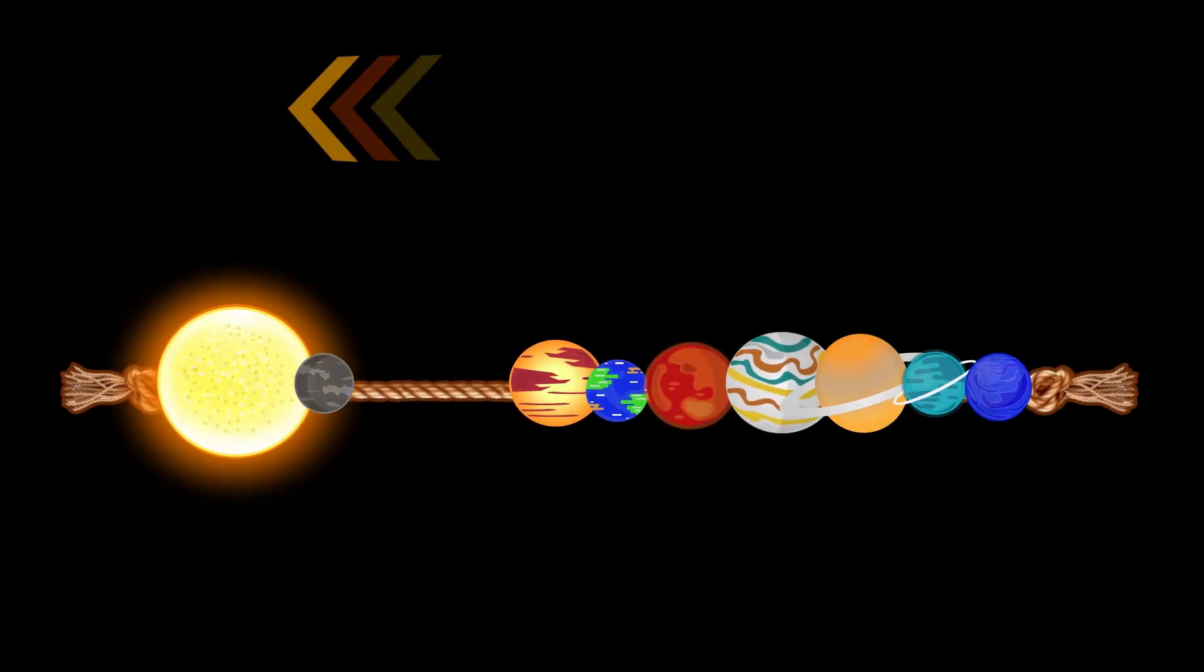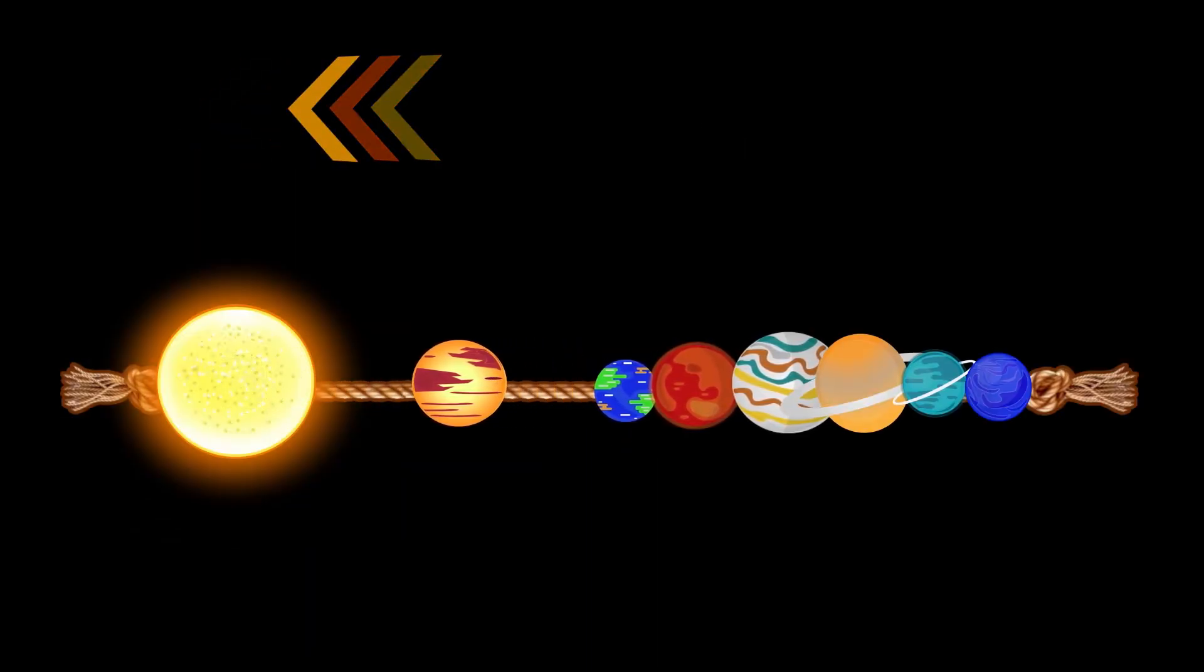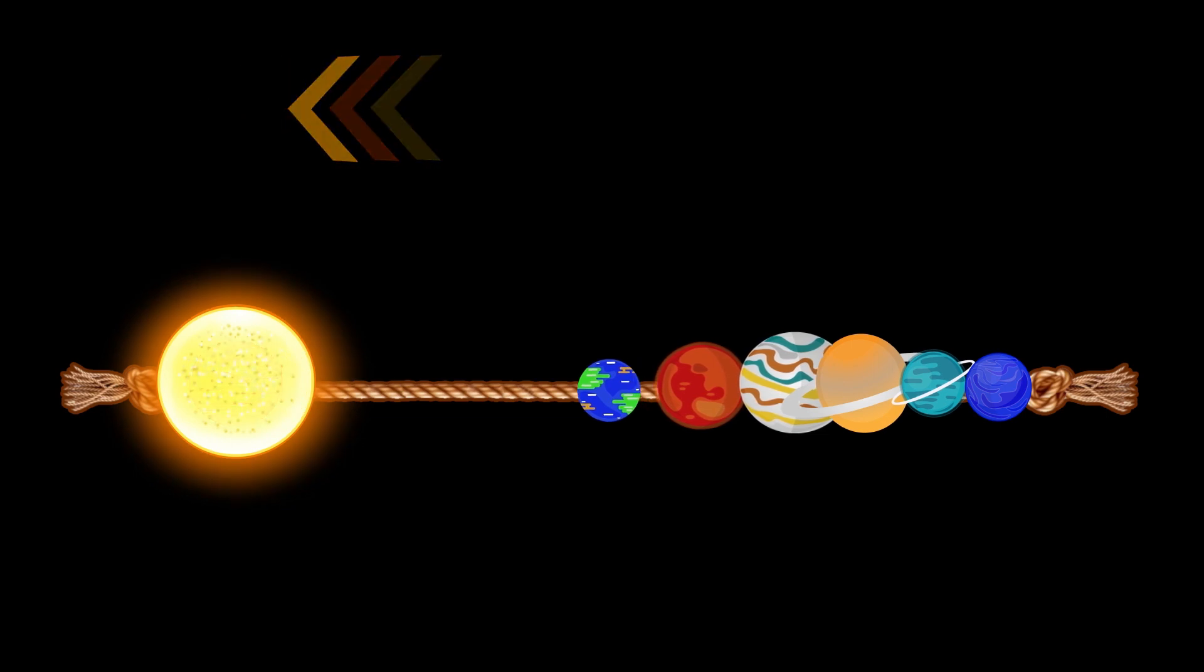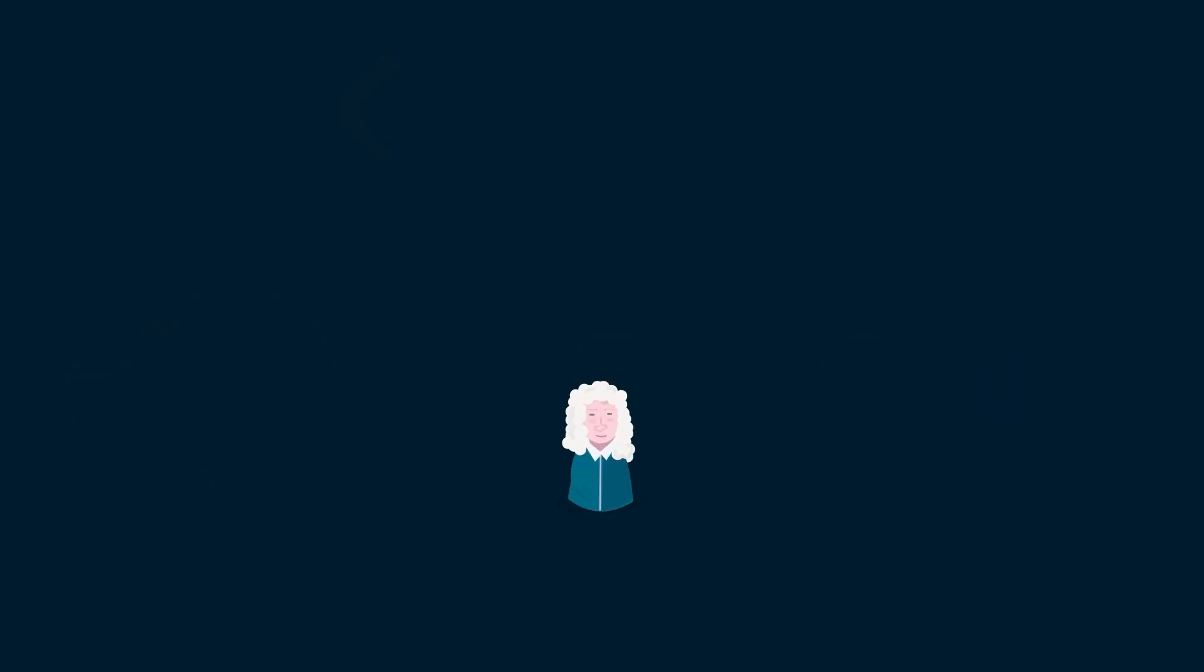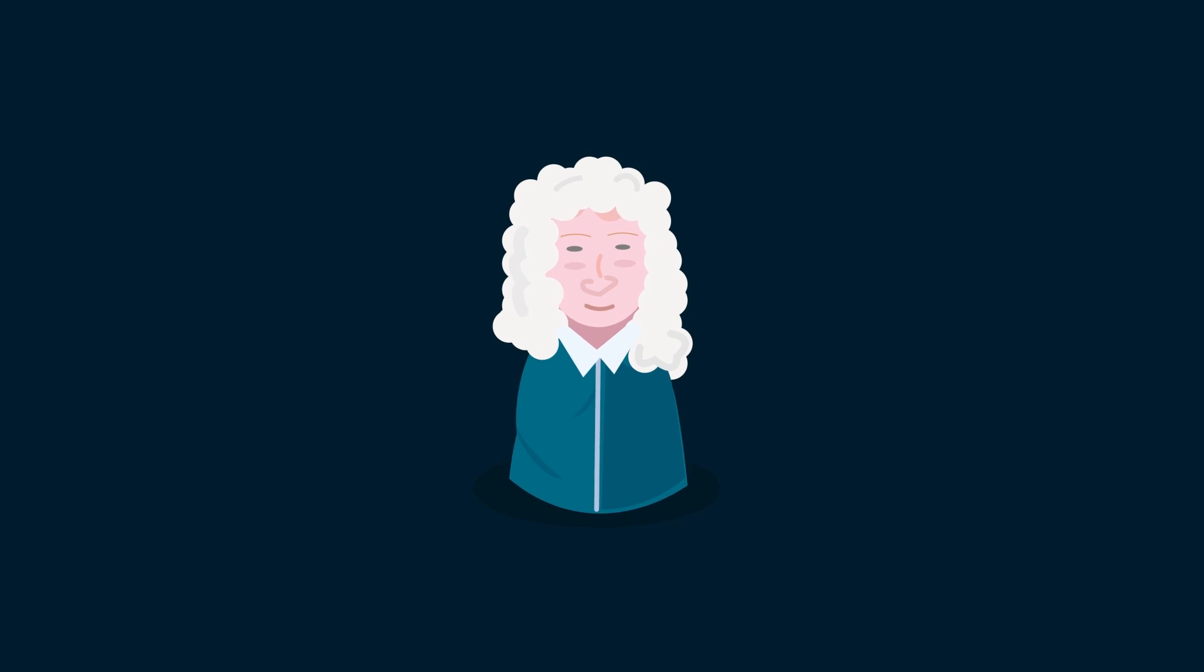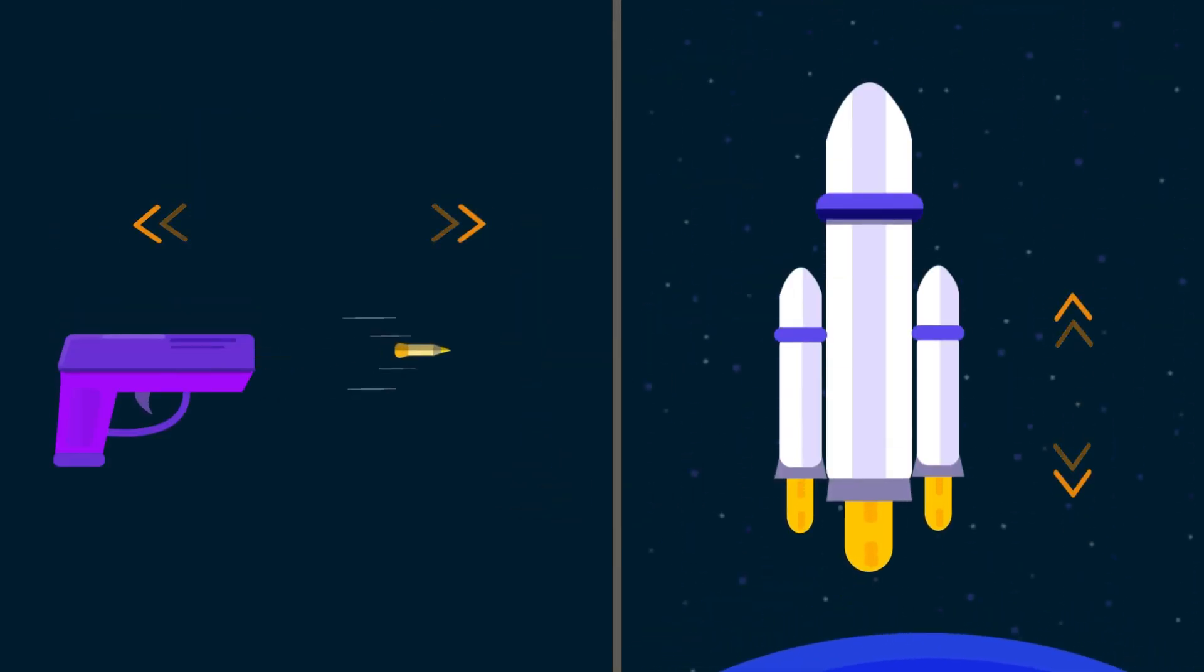But why do earth and other planets fall into the sun, then? We can answer this question by simply recalling Newton's third law of motion. Newton's third law states that interacting objects exert equal and opposite forces on each other.